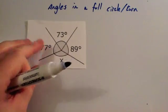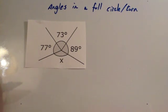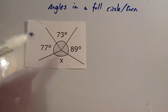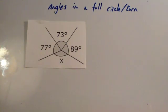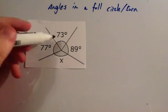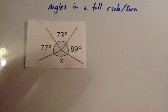To do that, add together the angles that they give you to find out what they add up to give and then take that away from 360 to work out the missing angle. So in this particular question, we're going to add together the 77, the 73 and the 89 and take that away from 360.